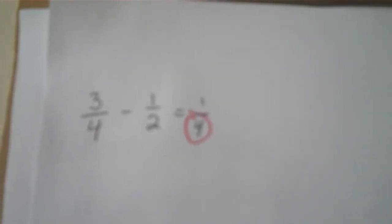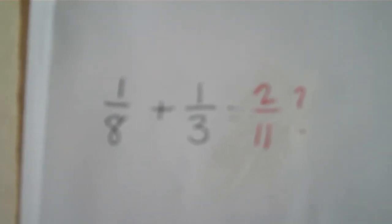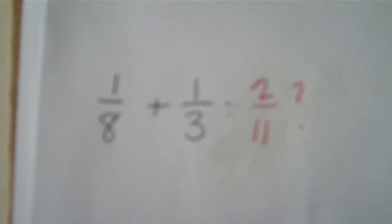But how did I get that four? Where did that come from? I'm going to explain it after I show you another example. Let's think about one eighth plus one third. How are we going to solve that? If we add the top and the bottom, we get two elevenths. Well, two elevenths is smaller than an eighth, and it's smaller than a third. So that doesn't make any sense.